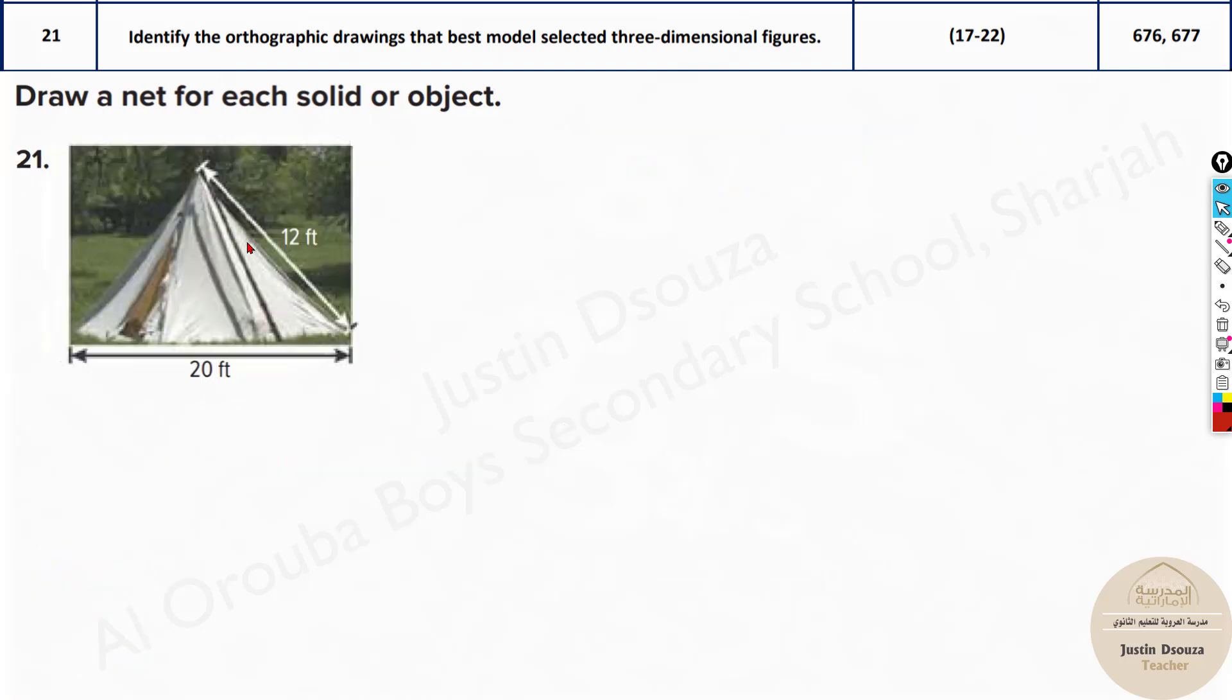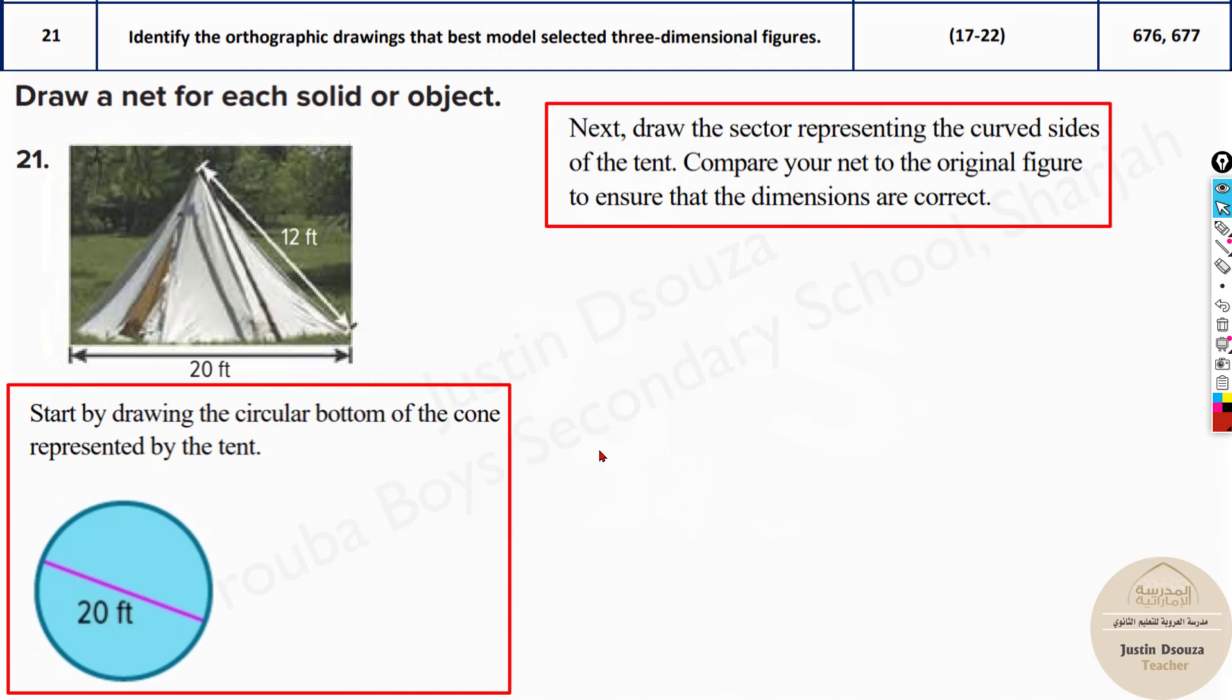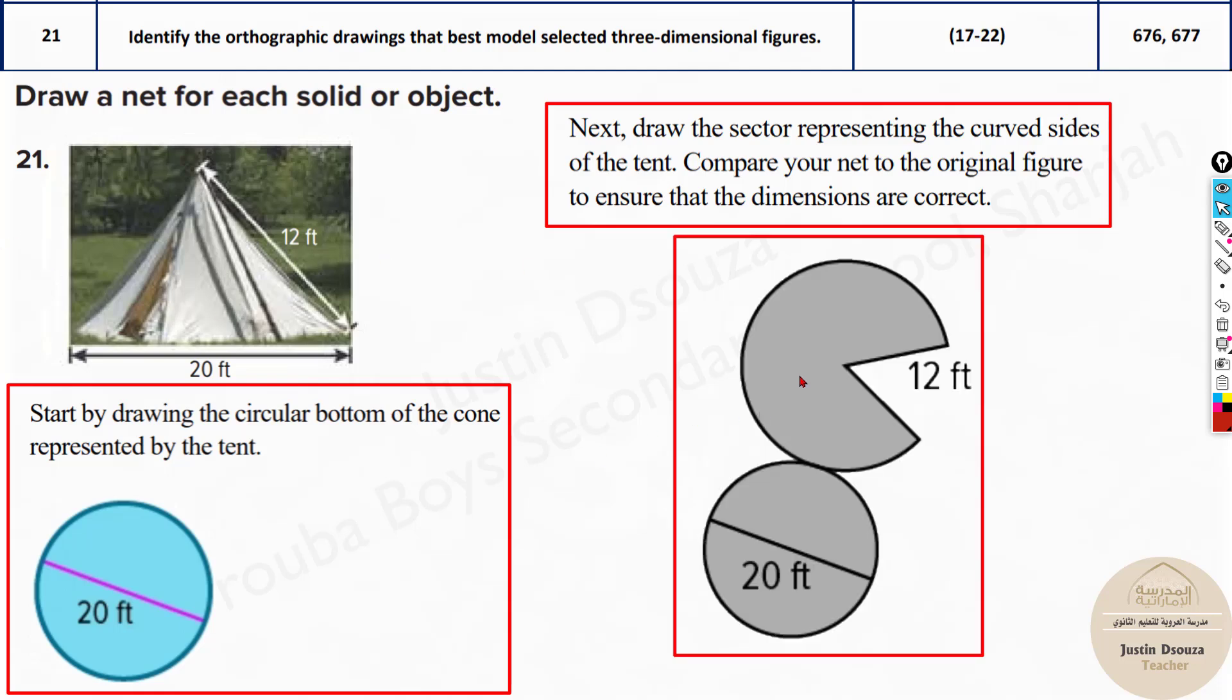Now, this is again a cone itself, you know, same thing what we just now did. But this is a real world. And now you can see here it's like too big, you know, because this is sort of a tent. And you will get a bigger circle. That's the only difference. And over here it's 12 feet and the diameter is 20 feet.